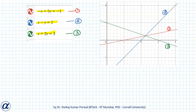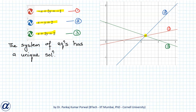We can also see this graphically. If I plot the graphs of these three equations, I can see that all three lines are concurrent at one point, and this point corresponds to the solution of our system of linear equations. Because there is only one such point, the system has a unique solution.